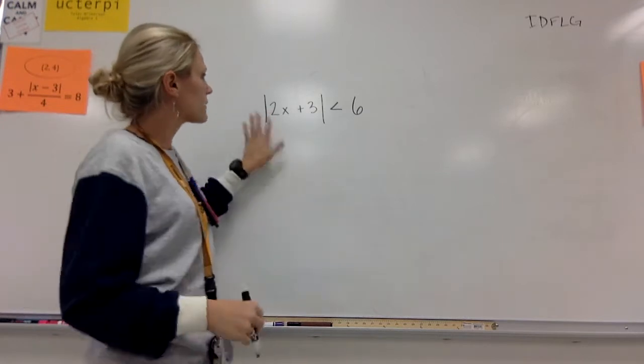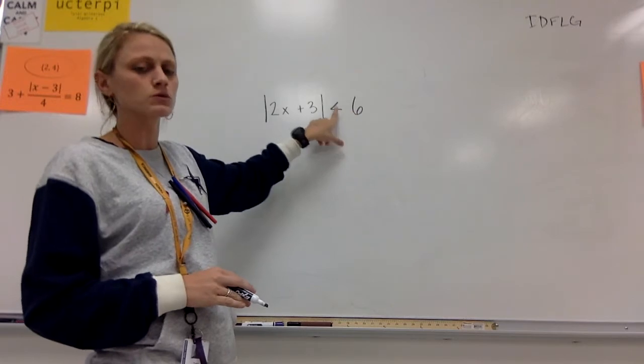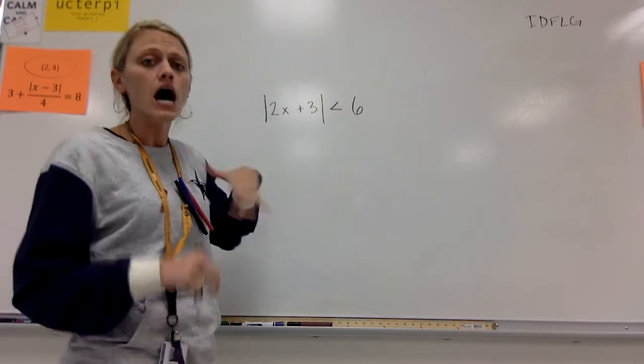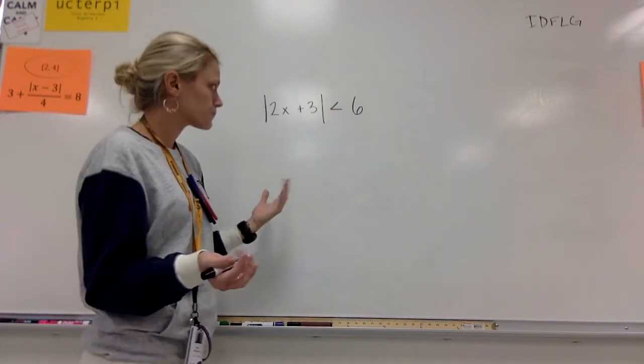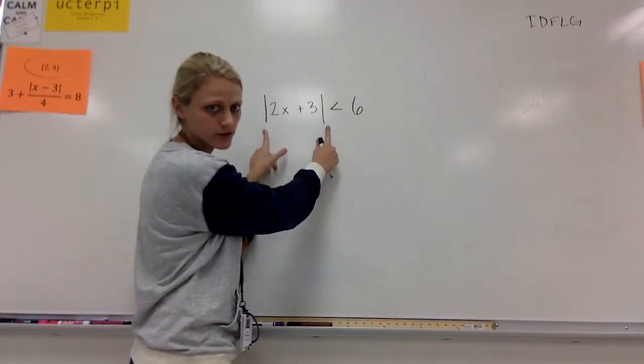Okay, so I've got my absolute value of 2x plus 3 is less than 6. So instead of an equal sign, I've got my inequality. So our first step here is still going to be to isolate the absolute value expression.